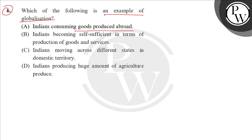One option is: India is becoming self-sufficient in terms of production of goods and services. Another option is: an Indian is moving across different states in domestic territory. Another option is: India is producing a huge amount of agricultural products. Globalization means all global.